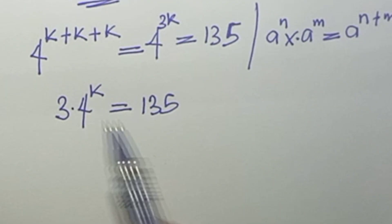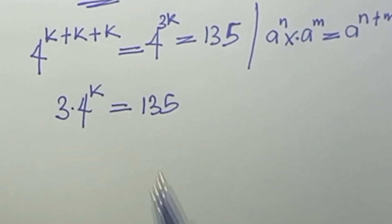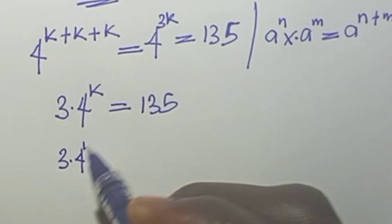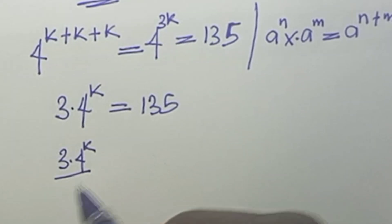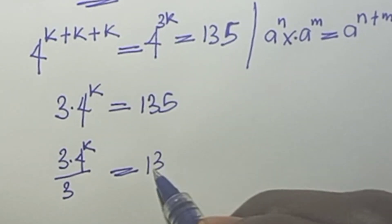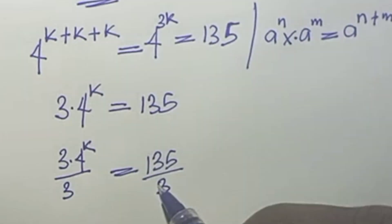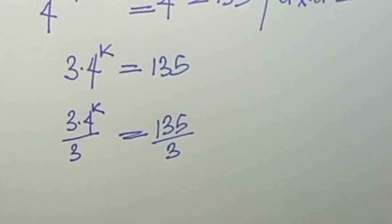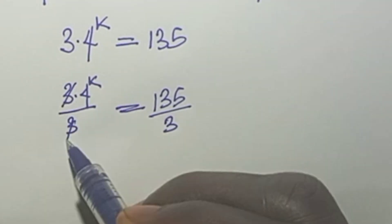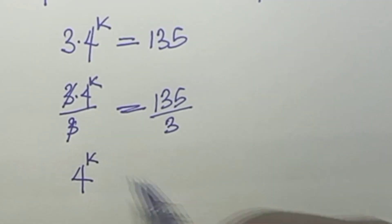Now we divide through by the coefficient of 4 to the power of k, which is 3. That gives us 3 times 4 to the power of k over 3, equals 135 over 3. When 3 cancels out, what is left is 4 to the power of k equals 45.